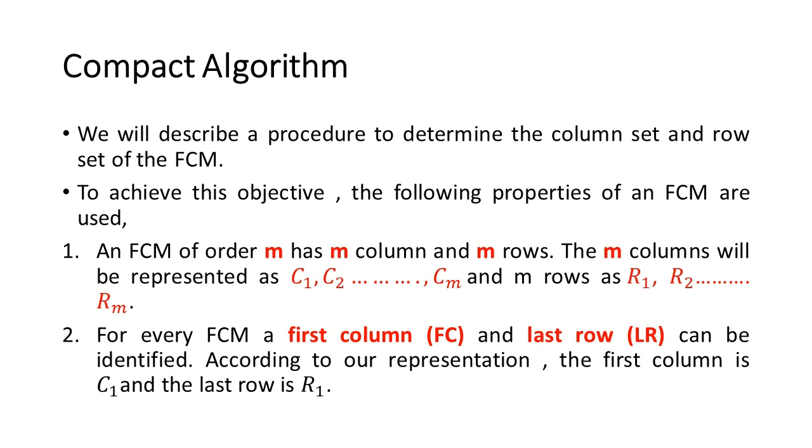For every FCM, a first column (FC) and last row (LR) can be identified. According to our representation, the first column is C1 and the last row is R1.